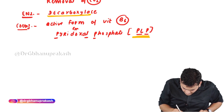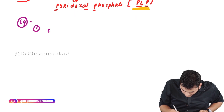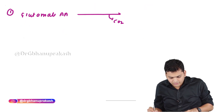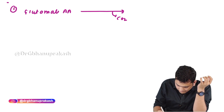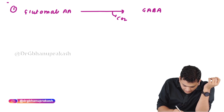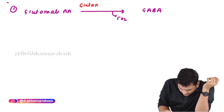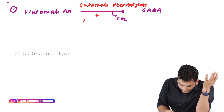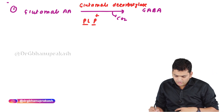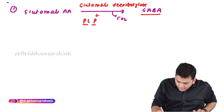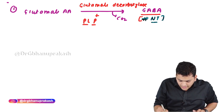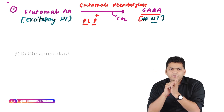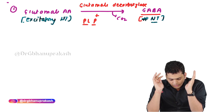Let's see examples of decarboxylation. If you take glutamate amino acid and remove the carbon dioxide, the molecule you get is GABA. The enzyme is glutamate decarboxylase, and the coenzyme is pyridoxal phosphate (PLP). GABA is an inhibitory neurotransmitter, while glutamate is an excitatory neurotransmitter — so an excitatory neurotransmitter converts to an inhibitory one by just eliminating carbon dioxide.